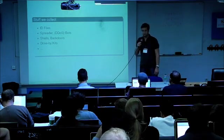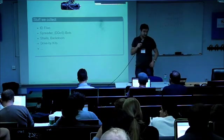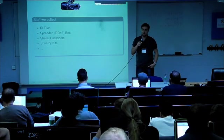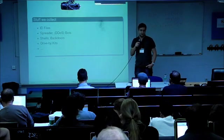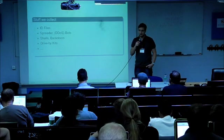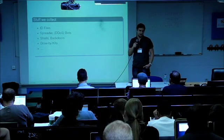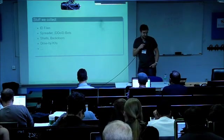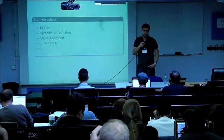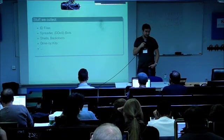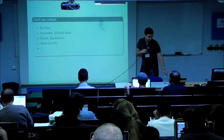Stuff we collect. We collect so-called ID files. ID files are used to check if a system is vulnerable. This is just a simple PHP file with some echoes giving back some information to the attacker. We collect spreaders, DDoS, bots, shells, backdoors, drive by kits, a lot of stuff.